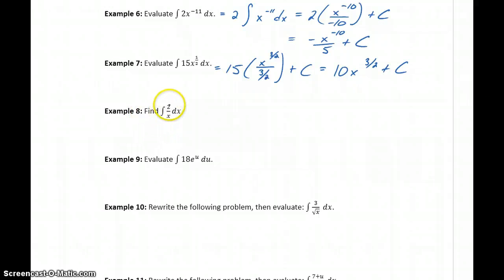In example 8, we've got the integral of 2 over x dx, which, keep in mind, this could also be written as the integral of 2x to the negative first dx. So any time that x is in the denominator, or we have x raised to the negative first power, we need to make sure we catch that that's going to be a natural log derivative. So this is going to be 2 times the integral of 1 over x, which would be natural log absolute value of x, plus some constant c. So we get 2 times natural log, again keep in mind we put those absolute value bars around the x, plus that constant c.